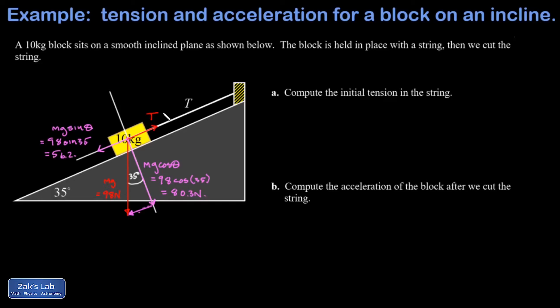It's tied in place with that string. That means there's zero acceleration parallel to the surface of the ramp, and that means the forces are balanced. In other words, the net force is zero on this object. So we get our answer immediately. If the forces are balanced in that parallel direction, it means the magnitude of the tension is equal to 56.2 newtons, and we're done with part A.